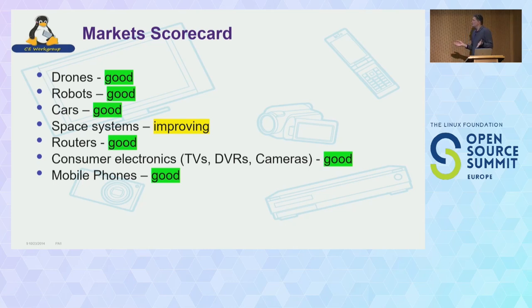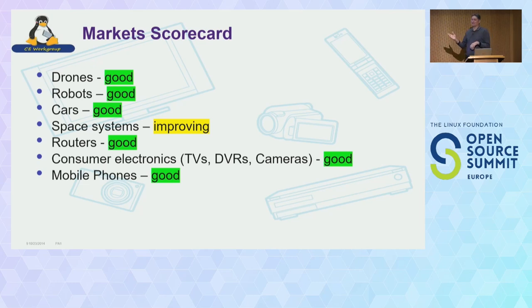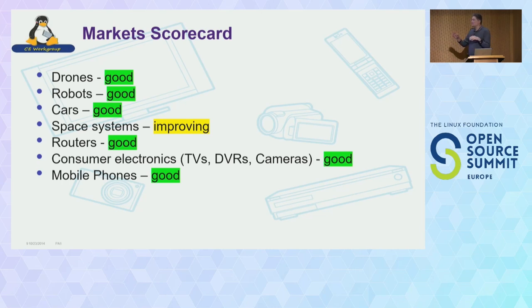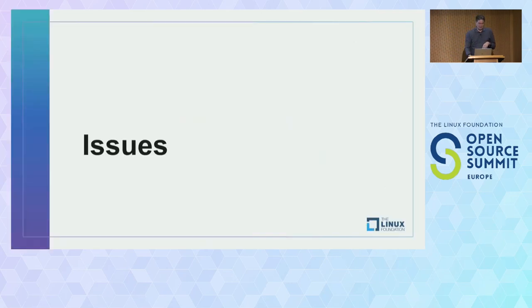Market scorecard: drones — doing pretty good; robots, cars, space systems, routers — good; consumer electronics — here we are totally dominating. I don't know of a television set being manufactured that doesn't have Linux in it. Phones — we're at 85% market share. DVRs, cameras — Linux is really dominant in a lot of places. There are lots of different markets.